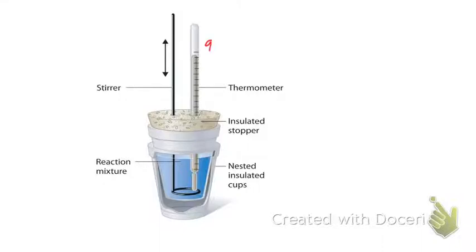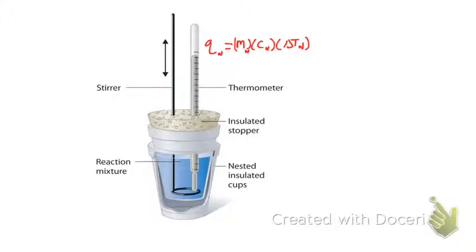To figure out the amount of heat energy transferred out of the reaction mixture into the water, we use: Q of water equals mass of water (in grams) times the specific heat of water — 4.18 joules per gram kelvin — times the change in temperature of the water. The change in temperature is temperature final minus temperature initial. Plug that into the equation to find Q of the water. That is step one.